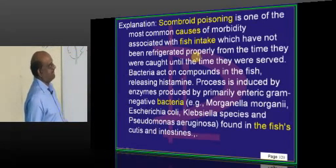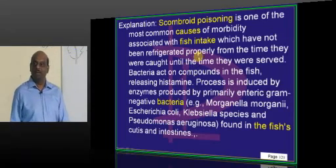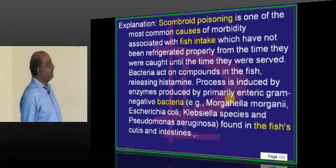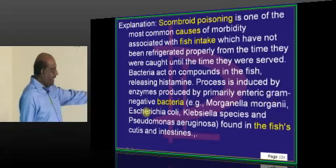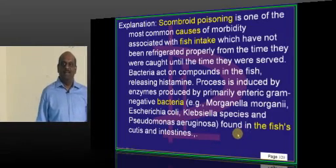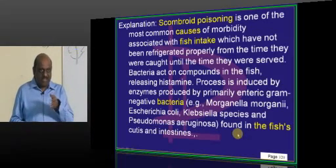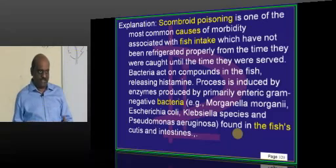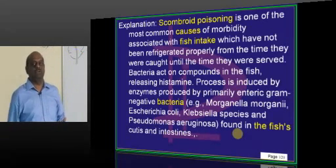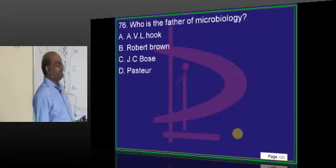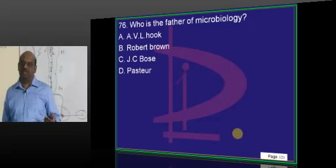What is this scombroid poisoning all about? Typically enteric gram-negative bacteria like Pseudomonas are found in the fish in their cuts and intestines. If the fish is not well cooked, the Pseudomonas causes the release of histamine — this typically happens with half-cooked fish.